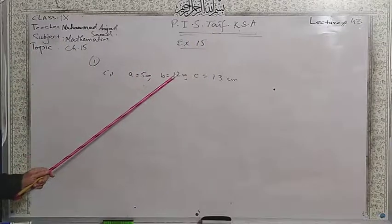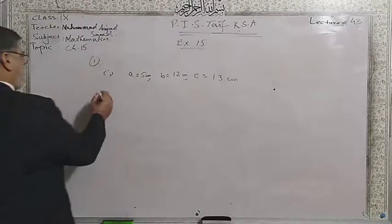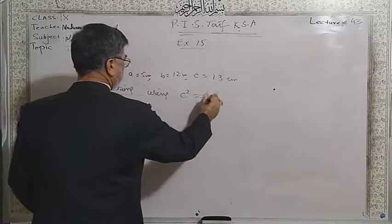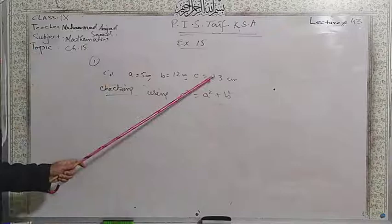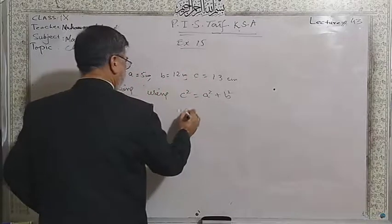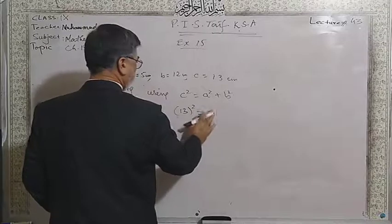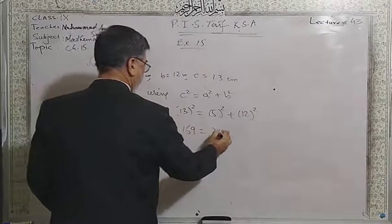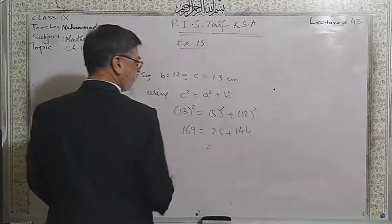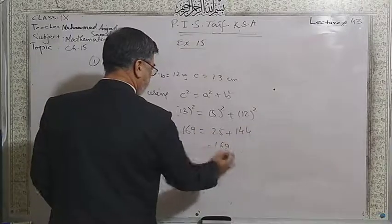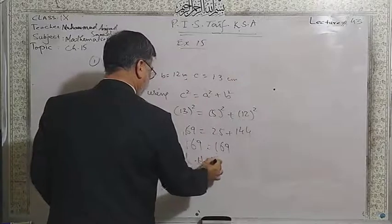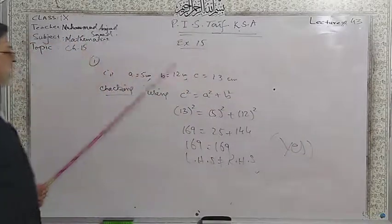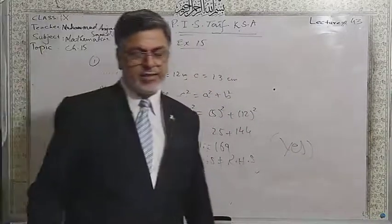Checking: a is 5 cm, b is 12, and c is 13. Using c² = a² + b², because c is the largest: 13² = 5² + 12², which gives 169 = 25 + 144 = 169. Left hand side is equal to right hand side, so yes, these sides are making a right angle triangle.